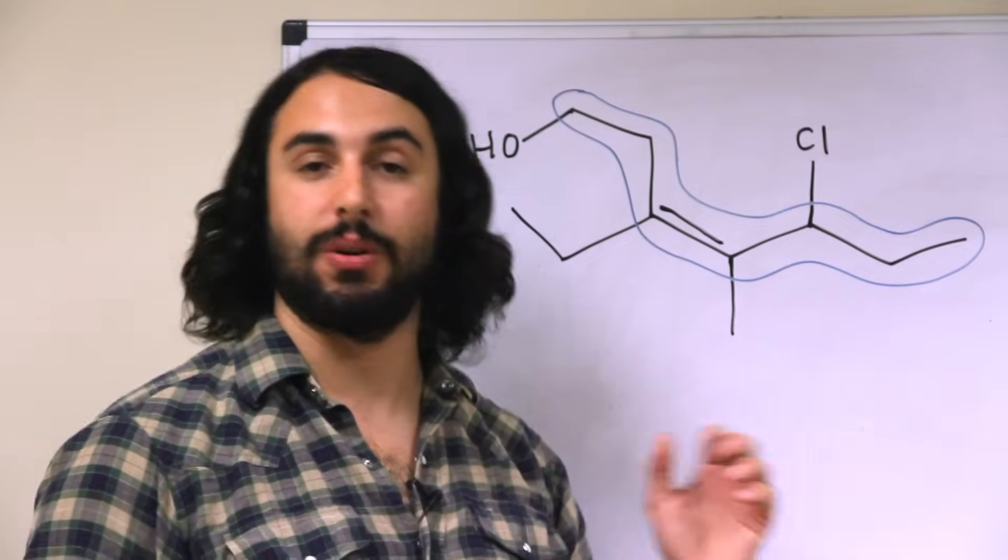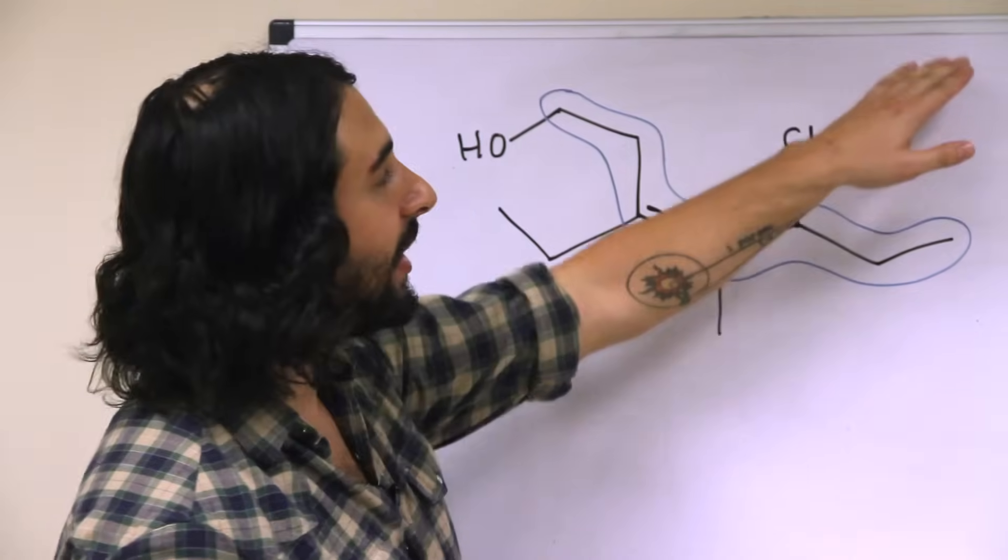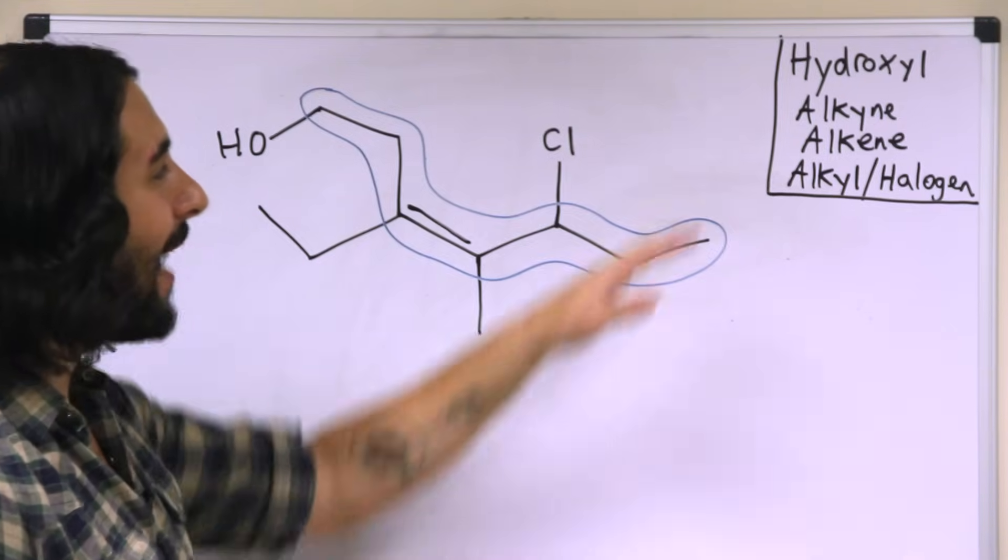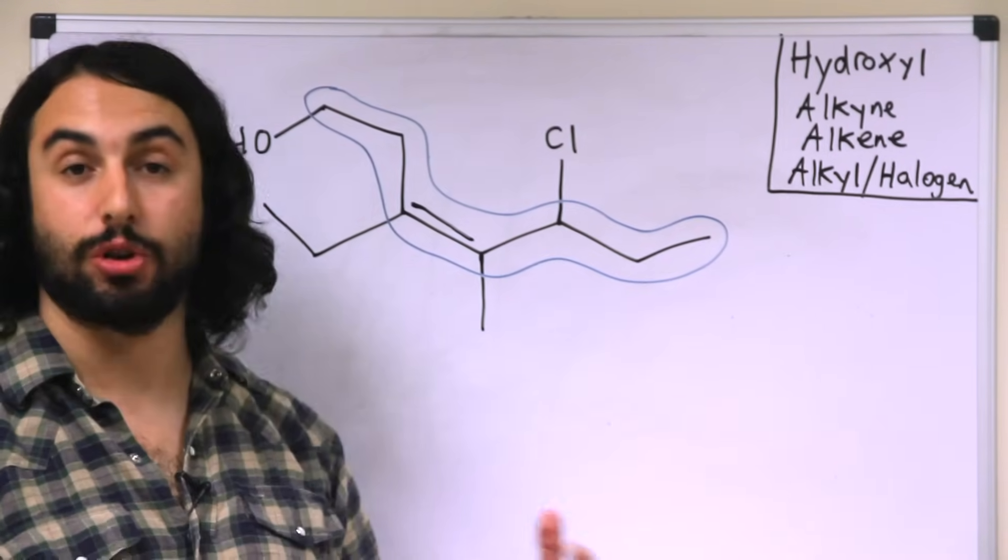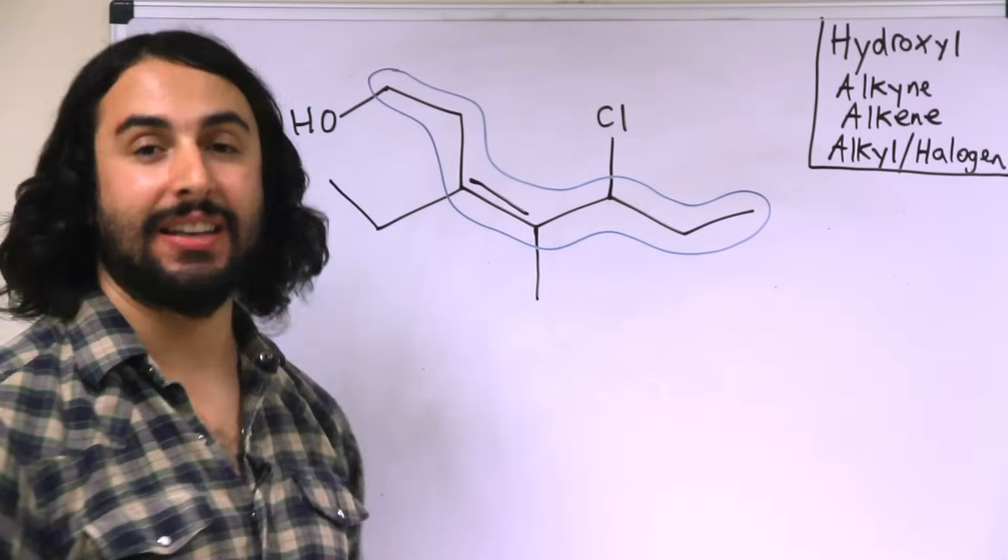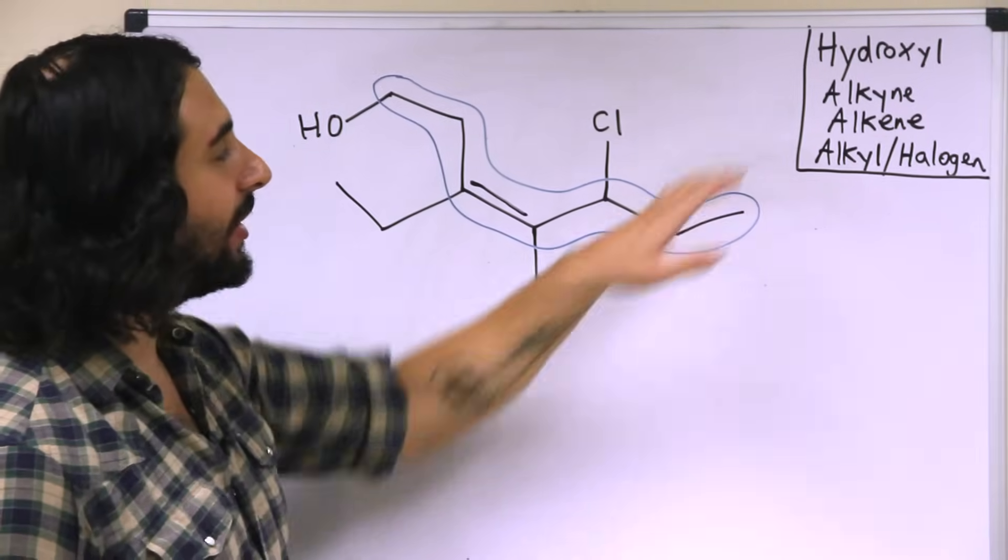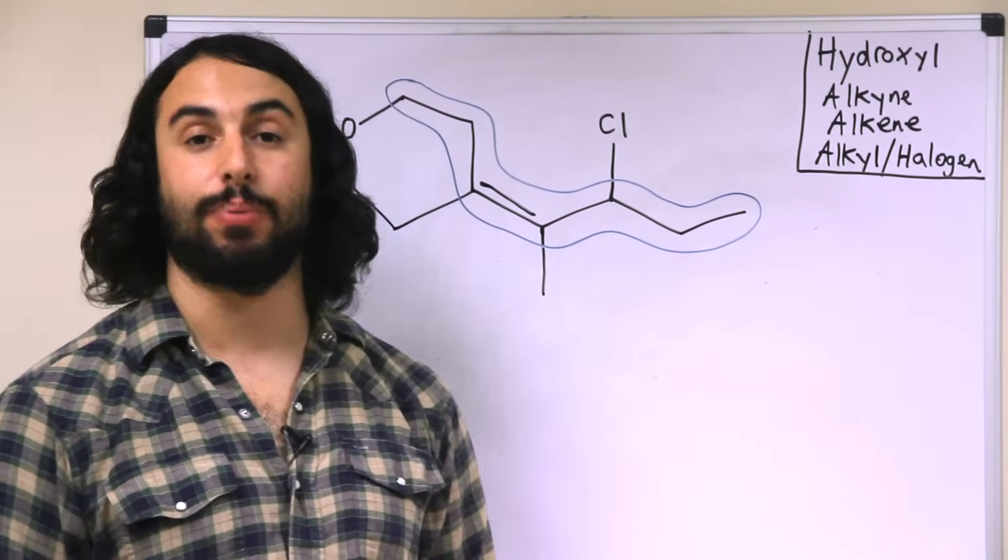Now what we have to keep in mind is that there is an order of prioritization of these functional groups that we need to consult. So of the groups that we've learned so far, this is the priority. The hydroxyl takes top priority. After that would be an alkyne, so a triple bond, then alkene or any double bond, and then alkyl groups and halogen substituents have the same priority.